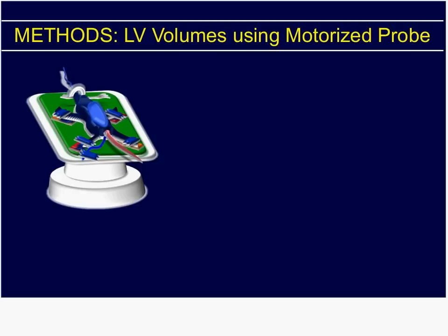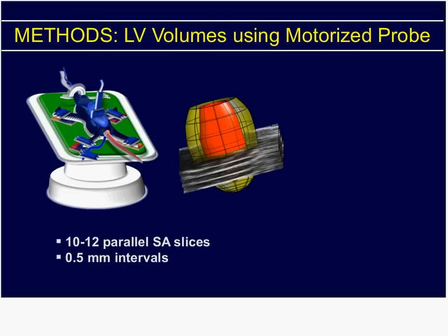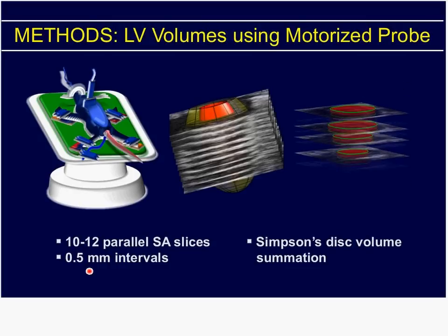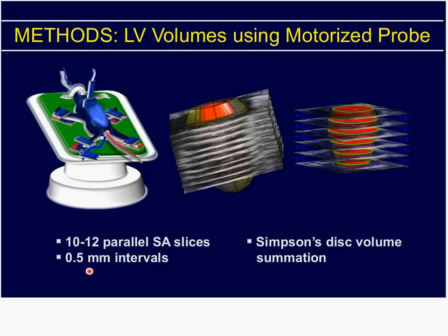We've got a stylistic rendition of the motorized transducer scanning the heart. In this study, we took 2 to 12 parallel short-axis slices stepped at 0.5 millimeter intervals. This is high-density imaging, and we are using this in a very MR-type of analysis — taking a dense short-axis stack and doing image analysis on every slice.